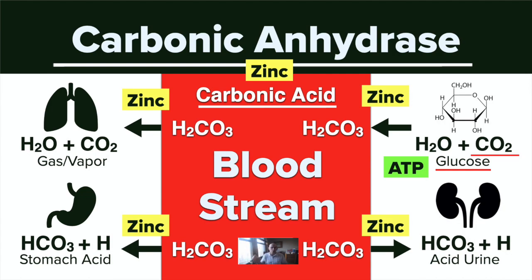This carbonic acid will either be broken down to a bicarbonate and a hydrogen ion, or to water and CO2, depending on which organ it's being dealt with. When it goes to the kidneys, it's disassociated into a bicarbonate and a hydrogen ion — that is your acid-base balance.